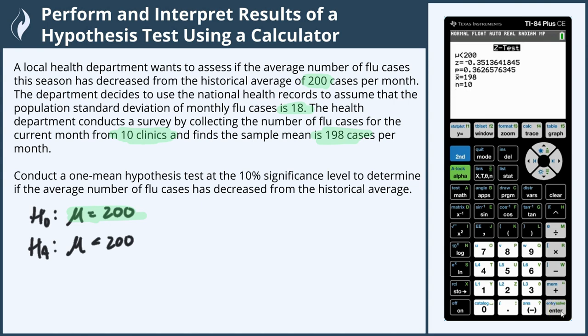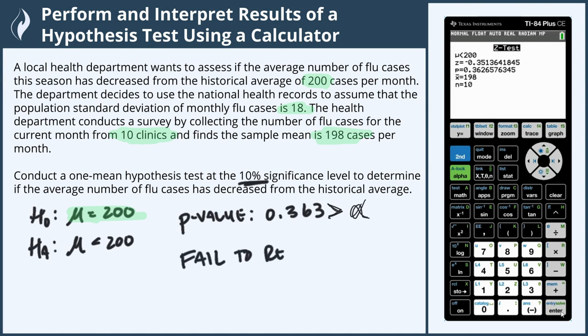Looking at the calculator, we can see that our p-value came out to be 0.363. The probability that we would get a mean of 198 cases if the actual mean were 200 cases is about 36%, which is above our significance level. So in this case, we fail to reject the null hypothesis. What that means is we do not have enough evidence to conclude that the number of flu cases has decreased.